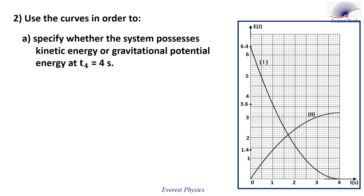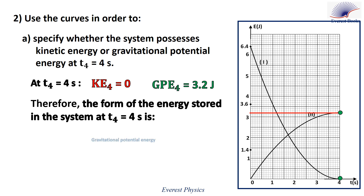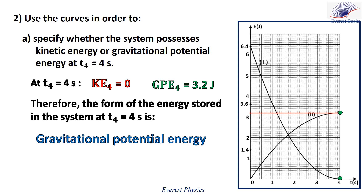Part B2a: use the curves to specify the form of energy stored in the system at time four seconds. Looking at curve I at t equals 4 seconds, KE equals zero. Looking at curve II at t equals 4 seconds, the gravitational potential energy equals 3.2 joules. Therefore, the form of energy stored in the system at time four seconds is gravitational potential energy.